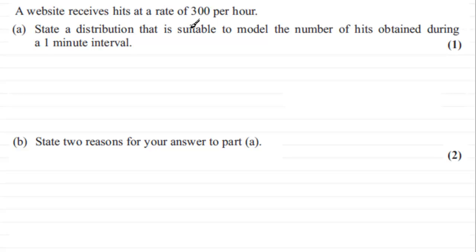Well, that's just going to be a Poisson distribution. And they're quite happy if you just wrote Poisson. But I would want to go a bit further than that because it does say the number of hits obtained during a one minute interval. So I'm going to look at the number of hits that we're going to get in a one minute interval.